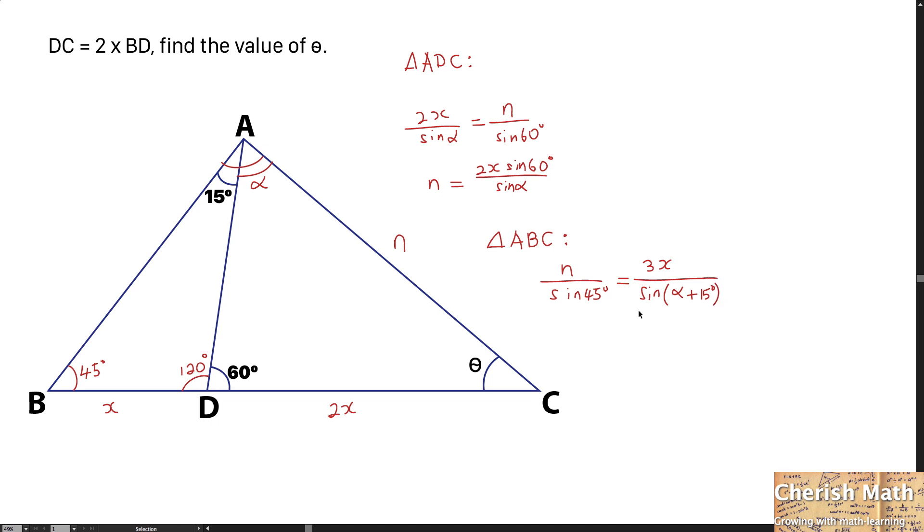By using cross multiplication again, I get the value of N as 3X sine 45 degrees divided by sine of alpha plus 15 degrees.